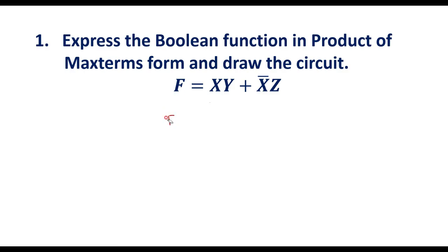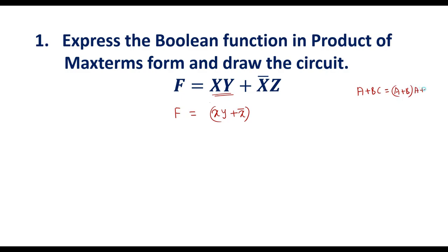f can be represented by applying the distributive law. We have xy + x̄z. We know that the distributive law states a + bc = (a + b)(a + c). Here, we assume 'a' is xy, and 'b', 'c' are x̄ and z respectively. So we get (xy + x̄)(xy + z).